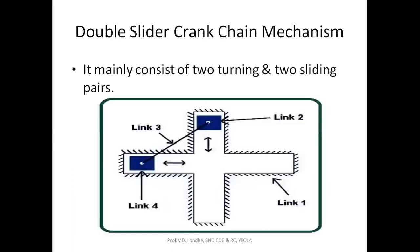The double slider crank chain mechanism mainly consists of four links: two sliders and one binary link connecting the two sliders, with the fourth link being fixed. There are two turning pairs and two sliding pairs, both of which come under the category of lower pairs. This is the basic configuration of the double slider crank chain mechanism.